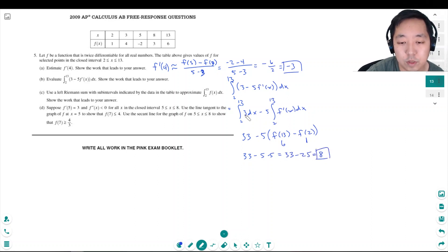If you didn't like this one, it's not too hard. This is 3x and I evaluate it from 2 to 13. So this is 3 times 13 minus 3 times 11. That's how I got the 33 right there.